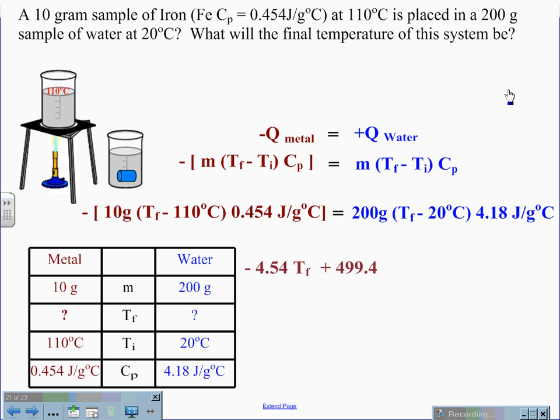As we calculate this out, we get a value of negative 4.54 times TF plus 499.4 because the negative outside the bracket times the negative inside the parentheses gives us a positive. And on the other side, we get values of 836 TF minus 16,720.